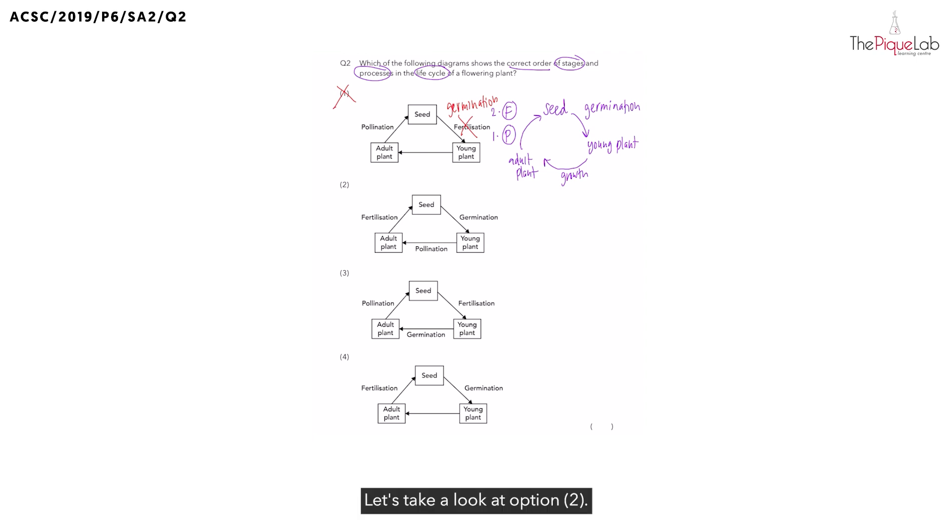Let's take a look at option 2. Do the seeds go through germination to become a young plant? Yes, this is correct. But, do the young plant go through pollination to become an adult plant? No, pollination only occurs in flowers.